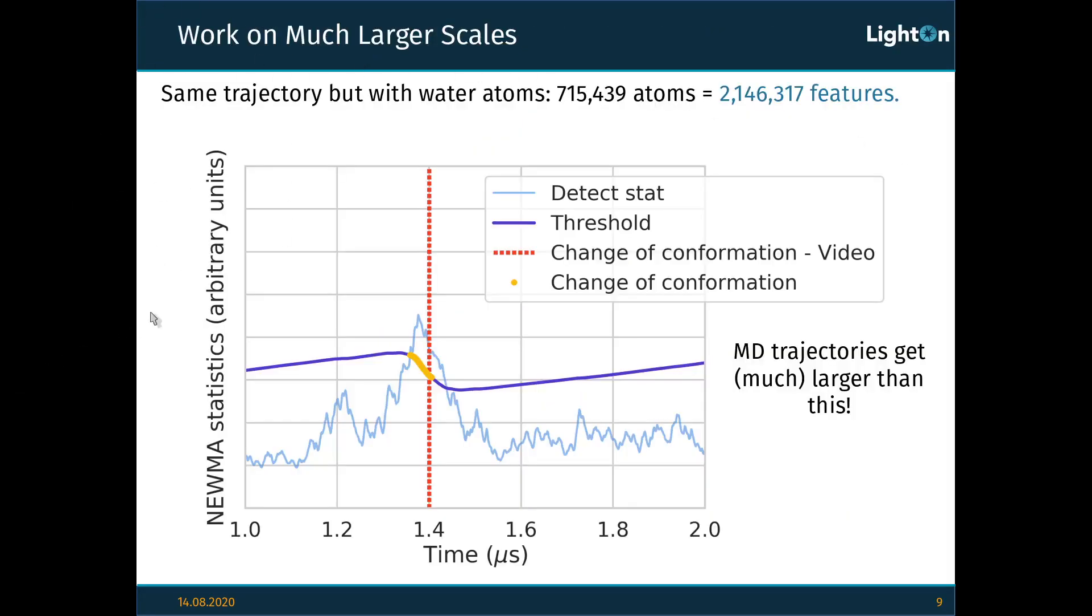Because of that, we are even able to work on a much larger scale. So remember the trajectory that I showed you before? Well, the Anton supercomputer also produced the same trajectories, but including all the atoms that surrounded the proteins. So not just the protein itself, but the water atoms, the ions that were around, everything. And that amounts to over 700,000 atoms, that is over 2 million features, since each atom has 3 coordinates. And even with that, we are able to analyze and predict correctly when changes are happening in this structure.